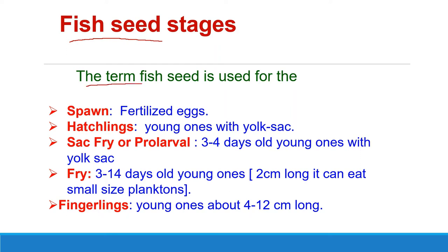The fertilized eggs are commonly called fish seed, but that is not entirely accurate. Fish seed is a term used in pisciculture for spawn, which includes fertilized eggs, hatchlings — just hatched young ones with yolk sac — pro-larval or sac fry, which are small-sized larvae with yolk sac, then fry which are 3 to 14 days old young ones, and fingerlings, which are young ones of large fishes measuring 4 to 12 cm in length.